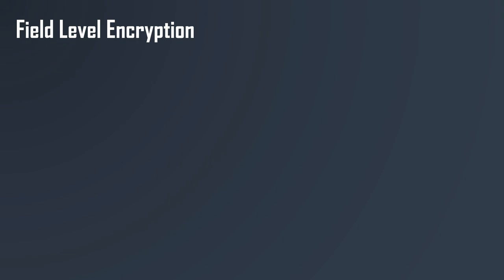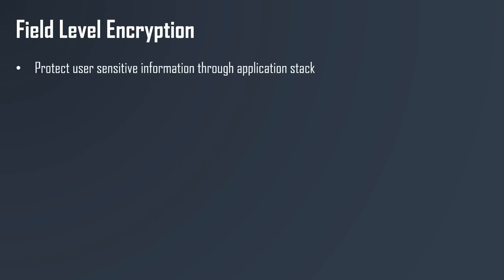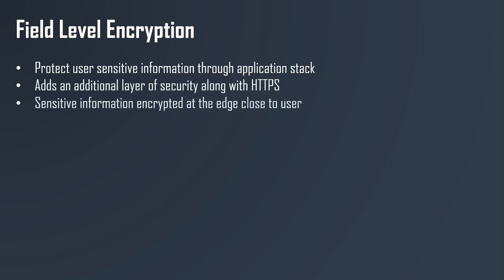Finally, let's talk about field-level encryption. This is to protect sensitive information through the application stack and adds an additional level of security alongside HTTPS encryption at the edge, close to the user. Anytime sensitive information is sent by the user, the edge location will encrypt it, and it can only be decrypted by someone with access to a private key. This uses asymmetric encryption.